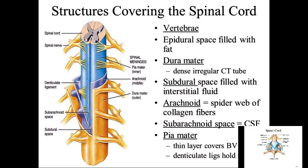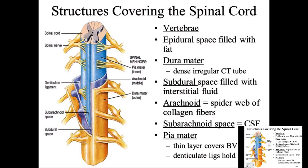Let's review the spinal meninges layers in cross-section. From inside to out: piamater, arachnoid, duramater — PAD. D is most external, P is most internal. The piamater is closest to the spinal cord; the duramater is closest to the vertebrae. The subarachnoid space is where cerebral spinal fluid flows. The subdural space, by contrast, is filled with interstitial fluid, not cerebral spinal fluid.